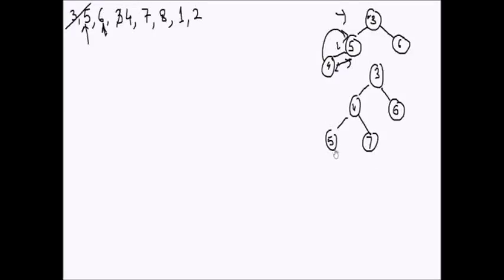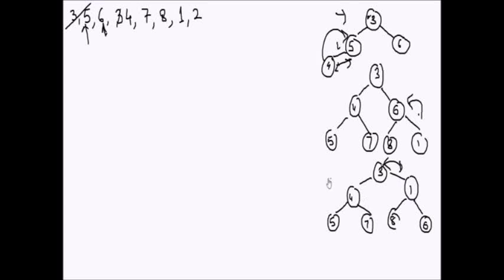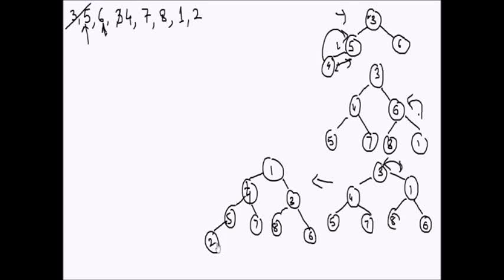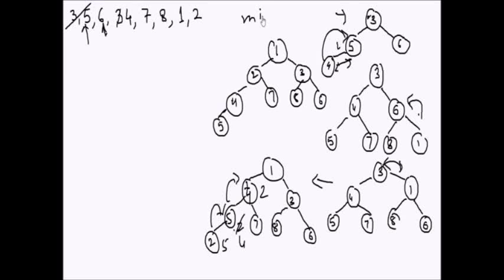As we insert 7, 8 — they satisfy min heap, so no action. When we insert 1, it does not satisfy the min heap property, so it is swapped with 6, then with 3. Similarly, when we insert 2, it shifts up from its inserted position, swapping with 5 and then 4, until the final heap is formed — a valid min heap.